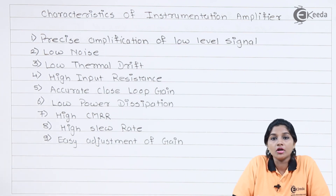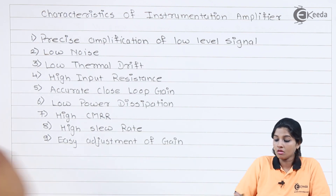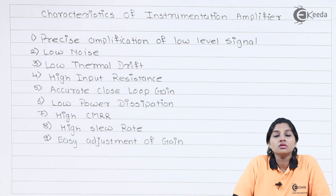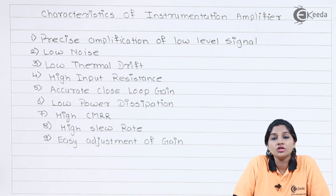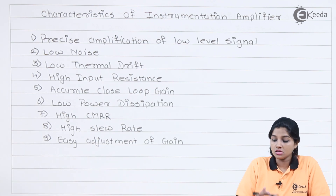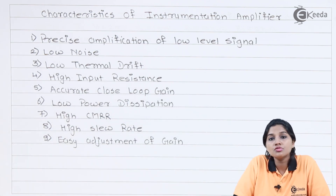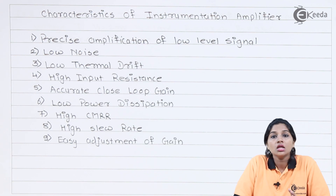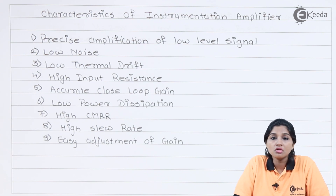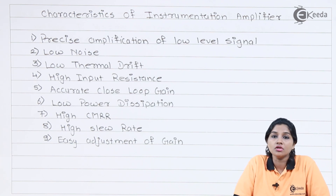The third characteristic is low thermal drift. The parameters of the instrumentation amplifier are required to be constant with variation in temperature — they are not supposed to change with changes in temperature. The next characteristic is high input resistance. Since the instrumentation amplifier consists of op-amps, ideally the input resistance or input impedance of the op-amp is required to be very high. Therefore, in the case of the instrumentation amplifier, the input resistance is required to be very high so that it can avoid the loading effect of the input source.